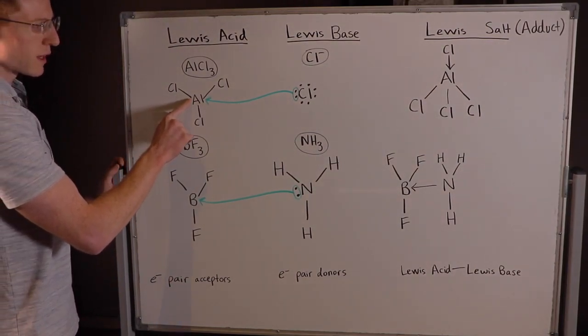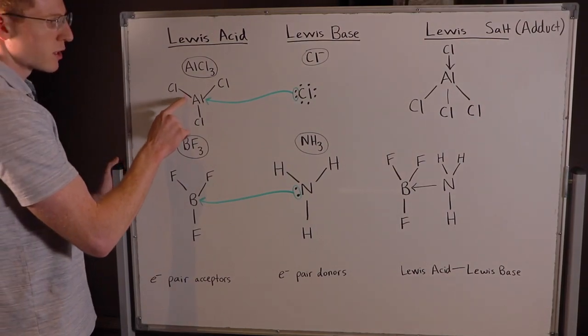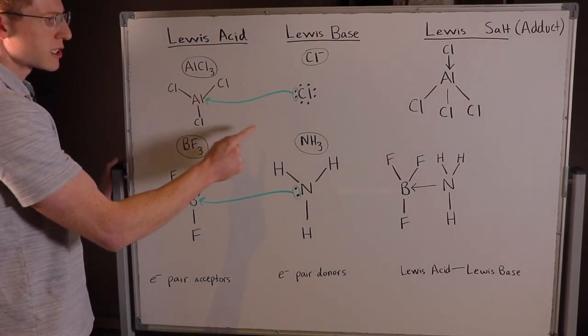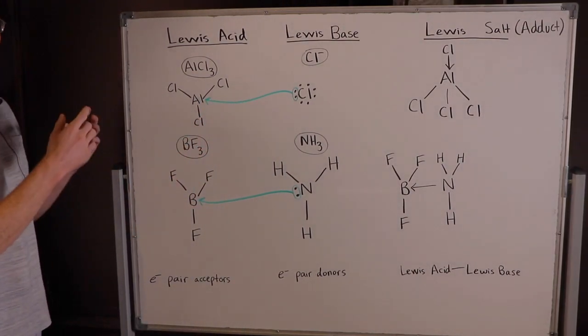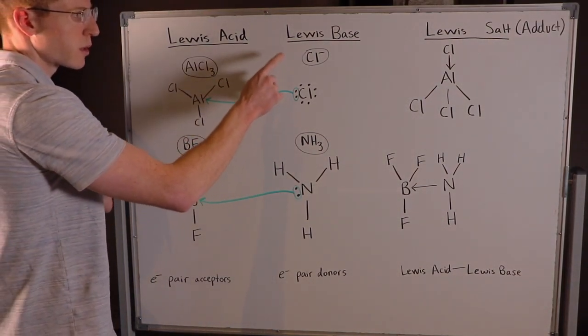Well, normally in the outer valence shell something can hold eight electrons total. So really what they're going to want to do is accept another electron pair to make another bond to fill their octet. And they get those electrons from Lewis bases.